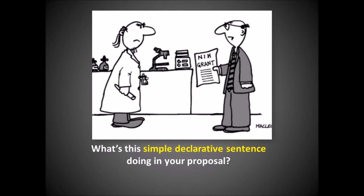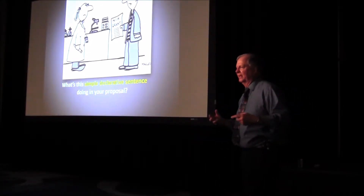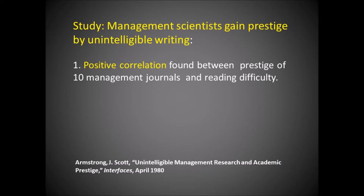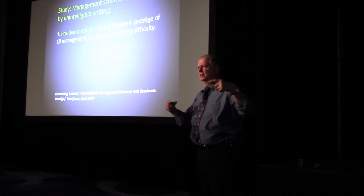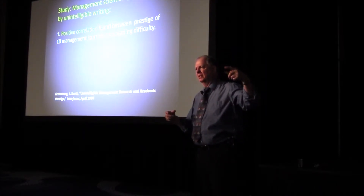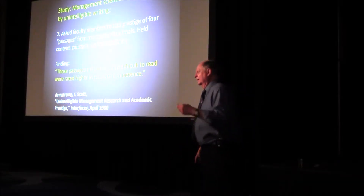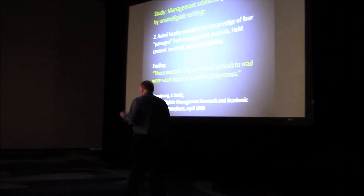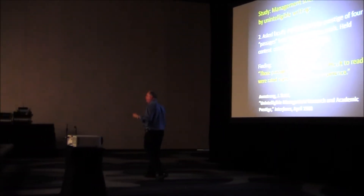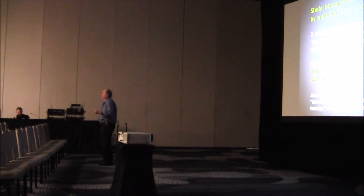Crafting readable sentences — you live in a culture that does not value crafting readable sentences. It's tough to live in that culture and try to write simple, clear sentences. This is a decades-old study, but it's useful: scientists found a positive correlation between the prestige of ten management journals and reading difficulty. They held content constant and varied the readability, and found that passages more difficult to read were rated higher in research competence. So recognize that you work in a culture that says if you write lousy ideas in a very complicated way, they'll get more prestige. It's tough to deal with that culture.